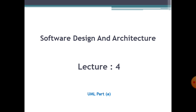We concluded that encapsulation and information hiding are two techniques to achieve modularization, which are internal to the abstraction. Then we moved to the last part of lecture three on information hiding, where we saw the pictorial representation of what information hiding looks like with and without it — basically seeing the difference between the two approaches. That was our brief overview of lecture three.